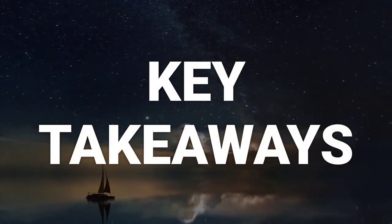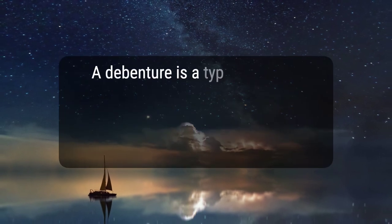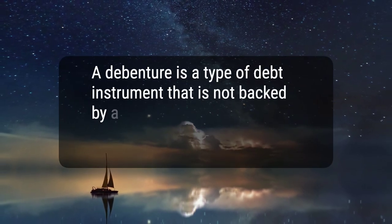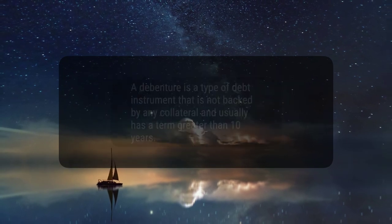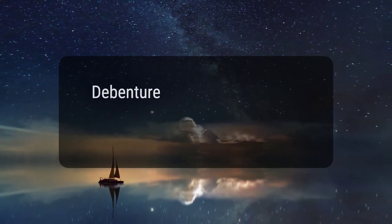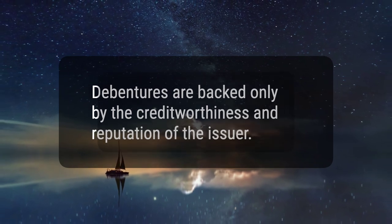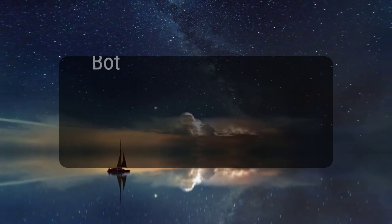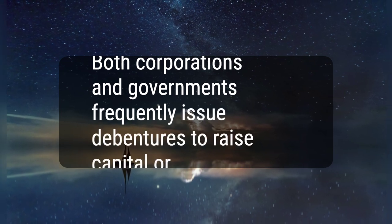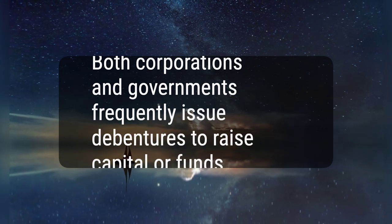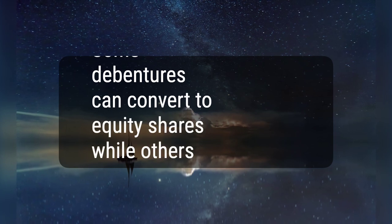Here are four key takeaways. 1. A debenture is a type of debt instrument that is not backed by any collateral and usually has a term greater than 10 years. 2. Debentures are backed only by the creditworthiness and reputation of the issuer. 3. Both corporations and governments frequently issue debentures to raise capital or funds. 4. Some debentures can convert to equity shares while others cannot.